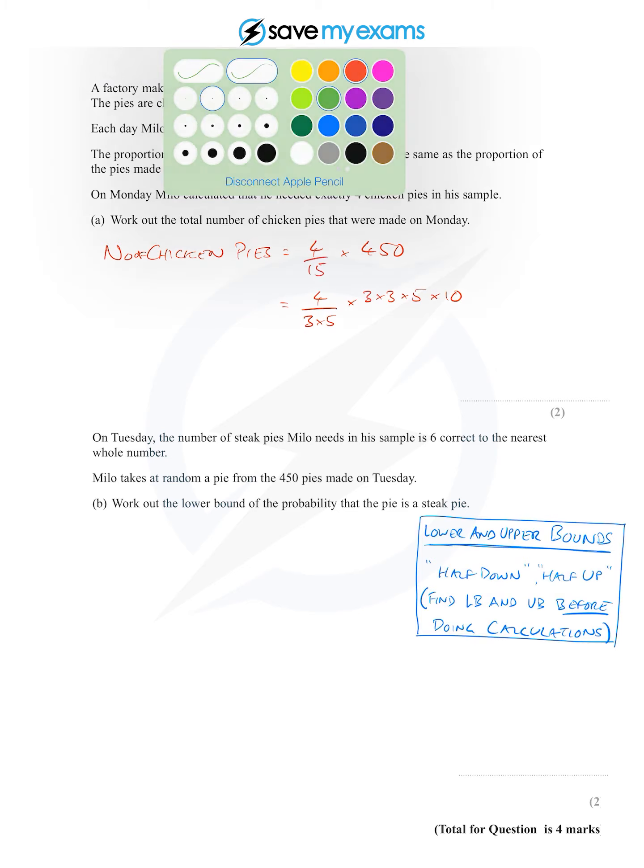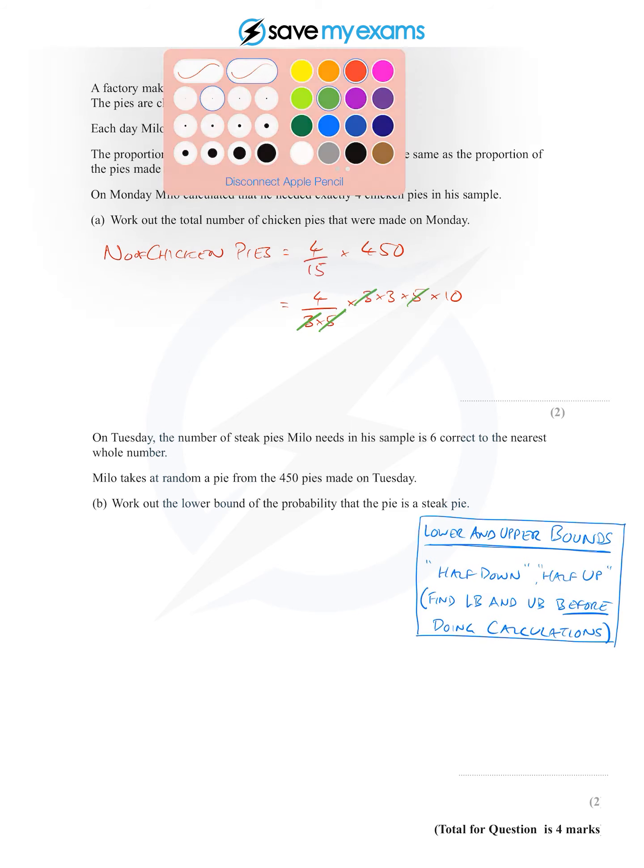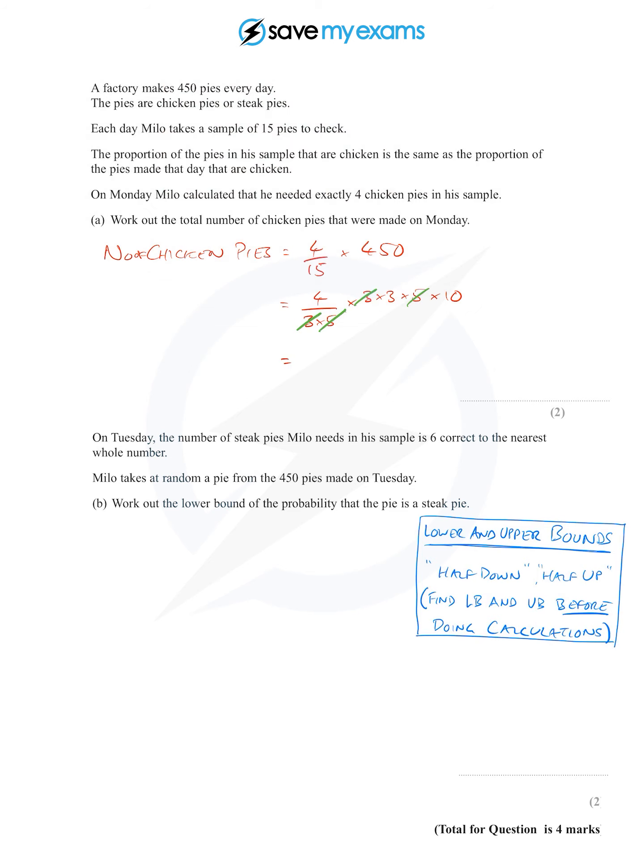Now I'm going to get the green cancelling pen out and cancel a 3 top and bottom, and cancel a 5 top and bottom. I get left with 4 times 3, which is 12, times 10, which is 120 chicken pies.